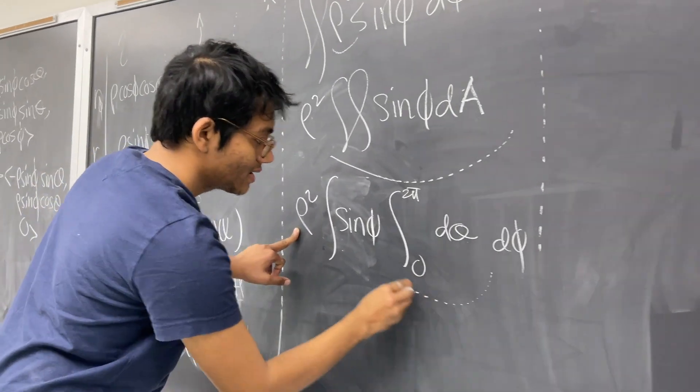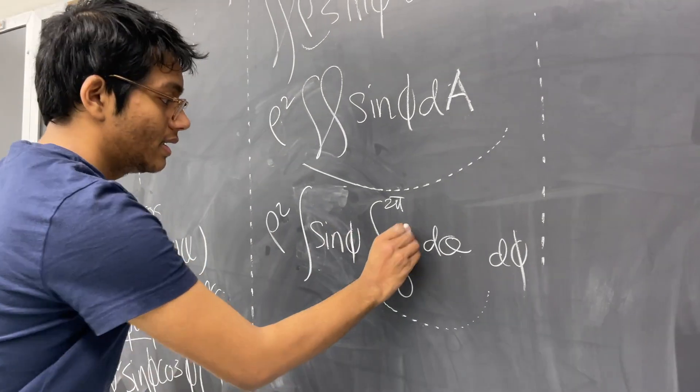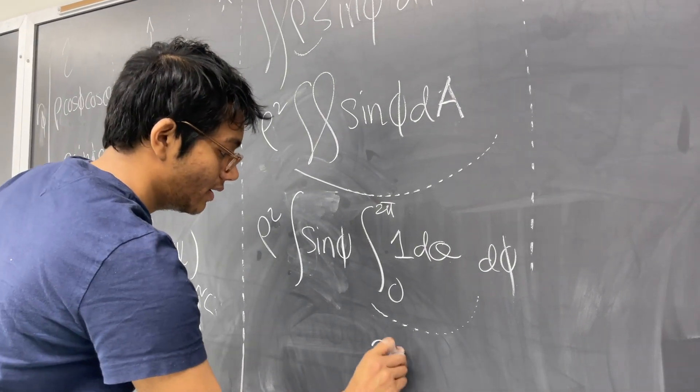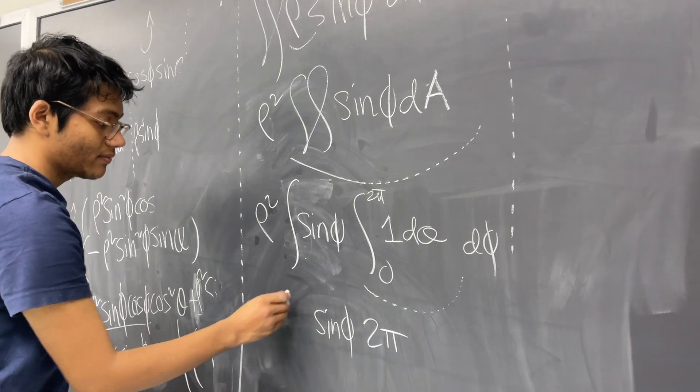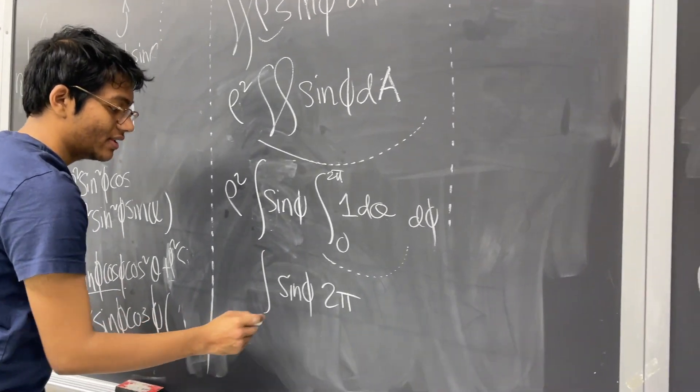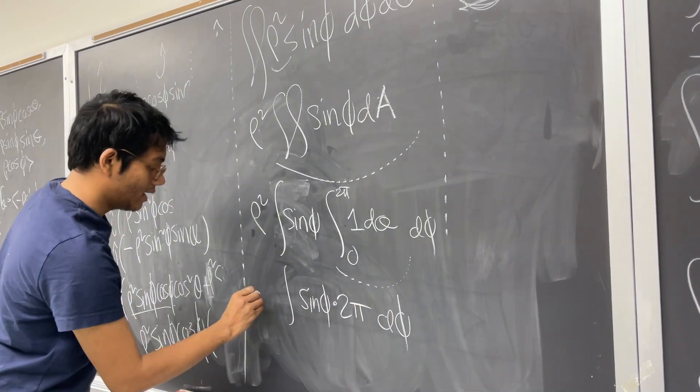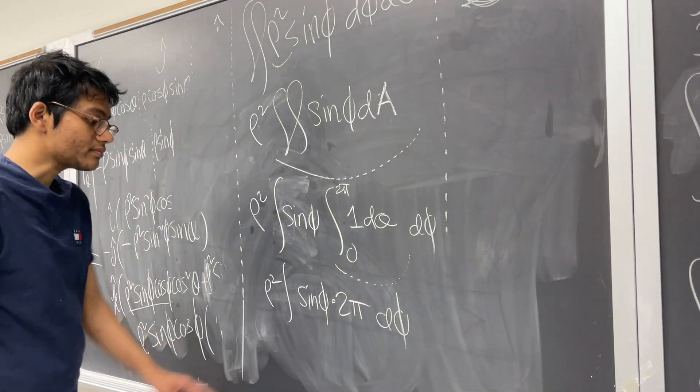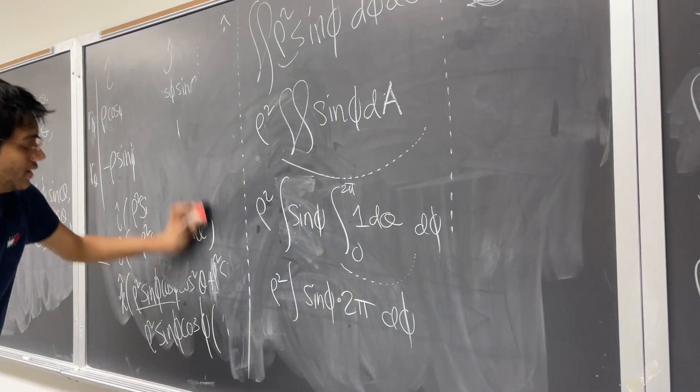So this inside, what is this? Well, the integral of 1 d theta from 0 to 2 pi, well, that's just 2 pi. And so I'll have sine of phi, the integral of sine of phi times 2 pi d phi times rho squared. I'm going to pull out the 2 pi, and we're going to find the final integral.